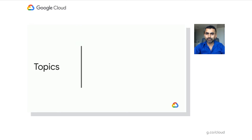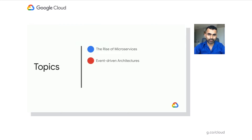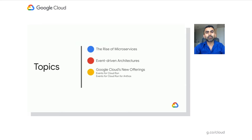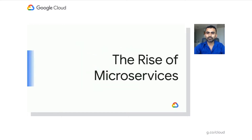I'm going to be covering four topics today. We'll start by describing the rise of microservices and some of the problems inherent in them. We'll then move on to describe event-driven architectures and how they solve some of those problems. We'll introduce Google Cloud's new offerings in this space, and we'll conclude by showing you a sentiment analysis demo. Let's start by describing the rise of microservices.